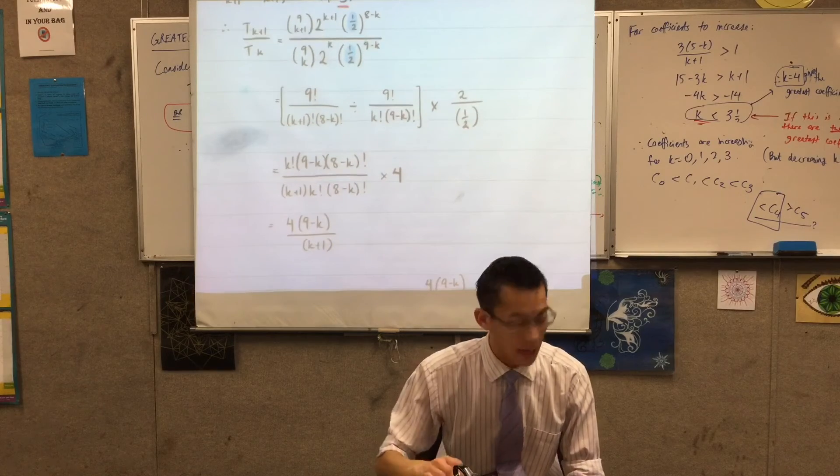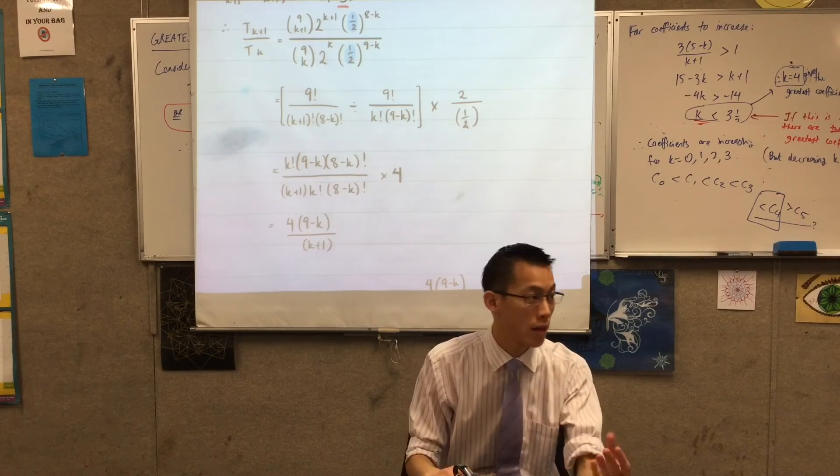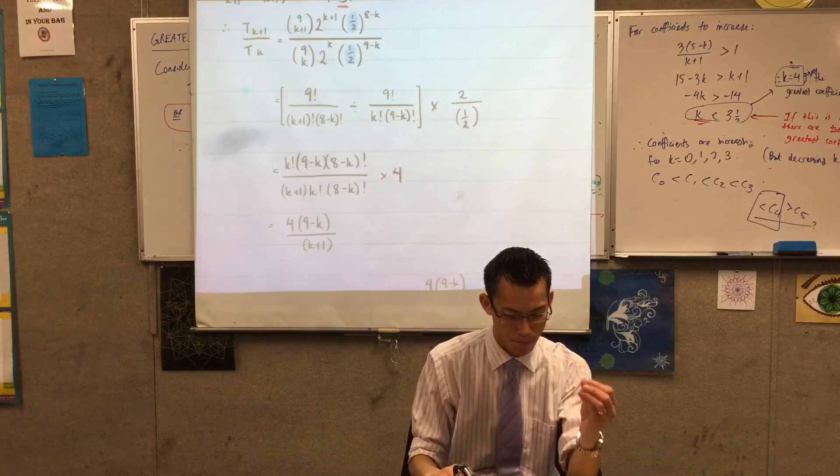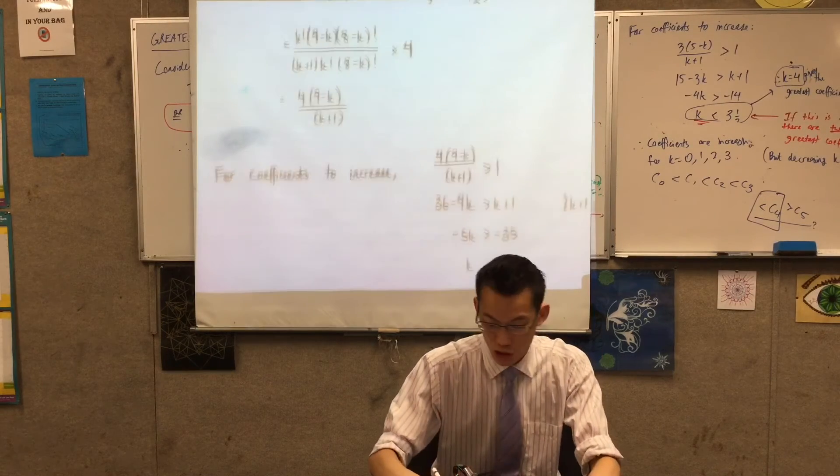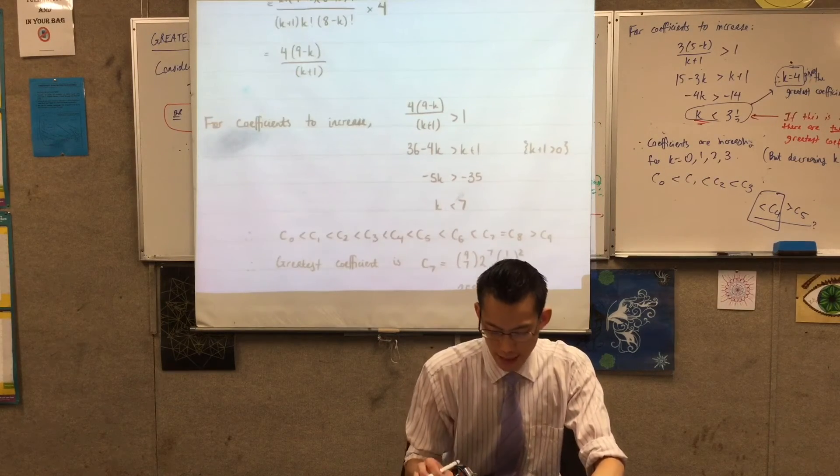Everything else proceeds in exactly the same way as it did before. You still come up with an expression for what that general ratio is. You still go ahead and you solve that ratio and then you get to here.